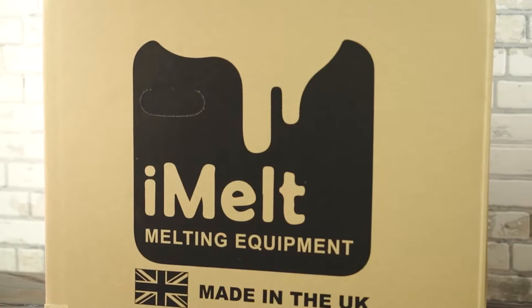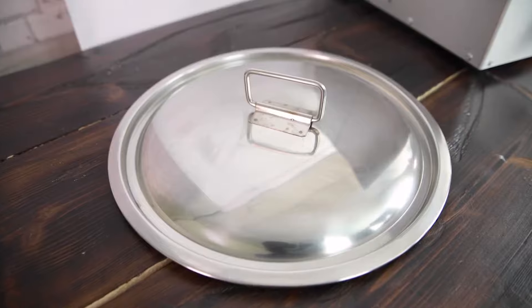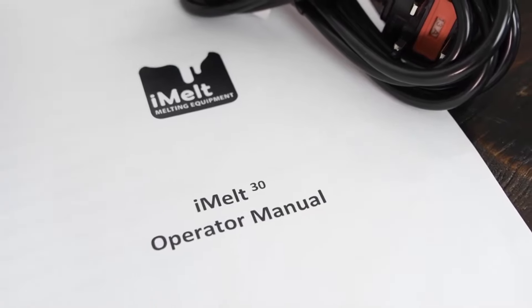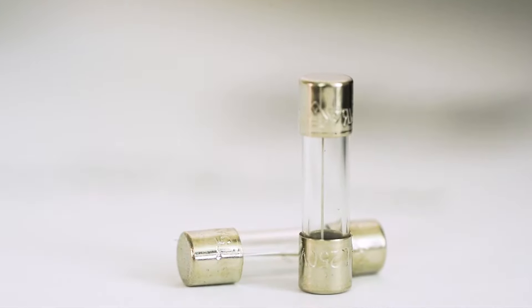The iMelt package will contain an iMelt unit, a lid, a power lead and instruction manual. There are also two spare fuses provided.